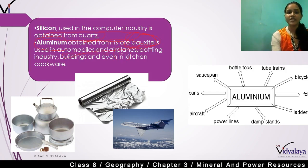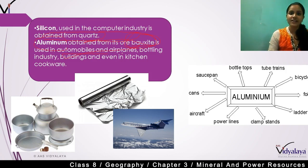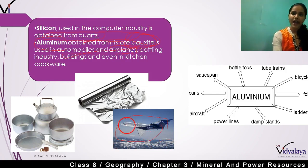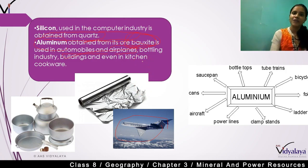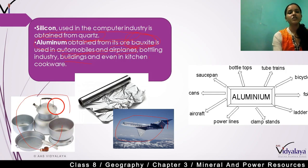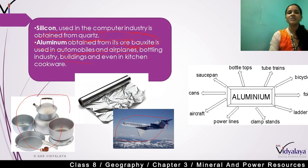We use aluminum in automobiles like cars, bicycles, and scooters — the body parts are made from aluminum. In aeroplanes, body parts are also made from aluminum. The bottling industry uses aluminum for bottles and cans, and kitchen utensils are made from aluminum as well.